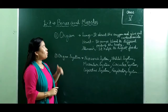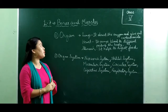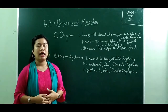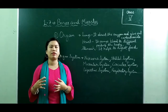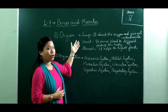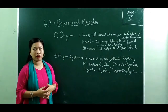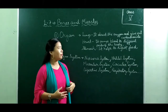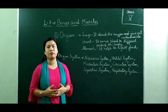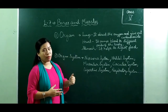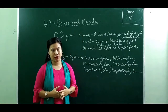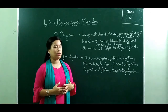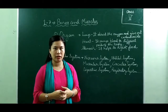Now let's begin the lesson about bones and muscles. First, let's learn about organs. Our body has several organs, and each organ has a different function. For example: lungs absorb oxygen and release carbon dioxide; the heart pumps blood to different parts of the body; and the stomach helps to digest food.